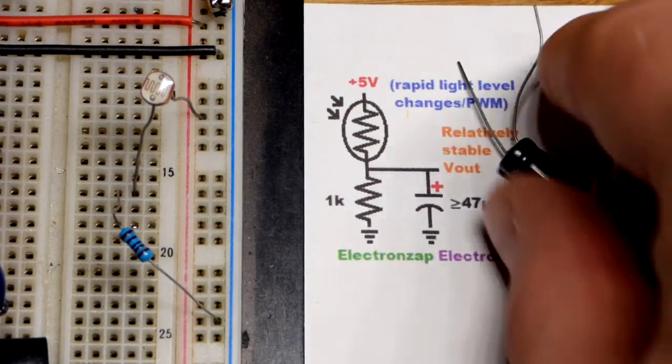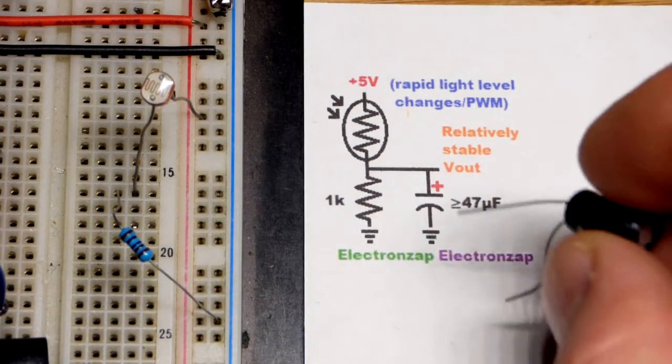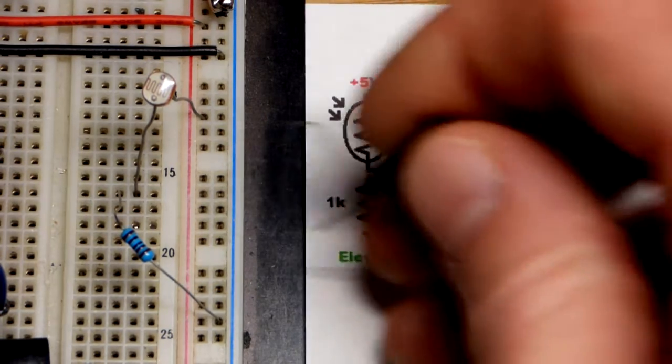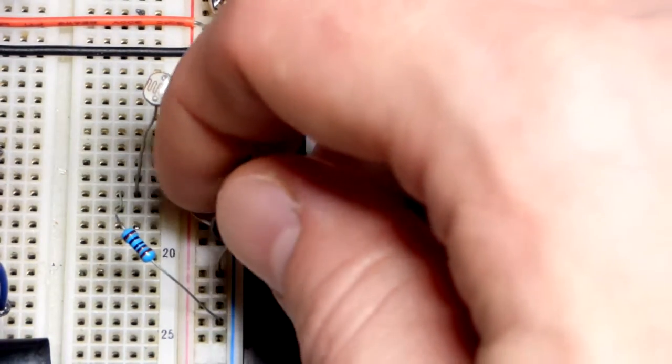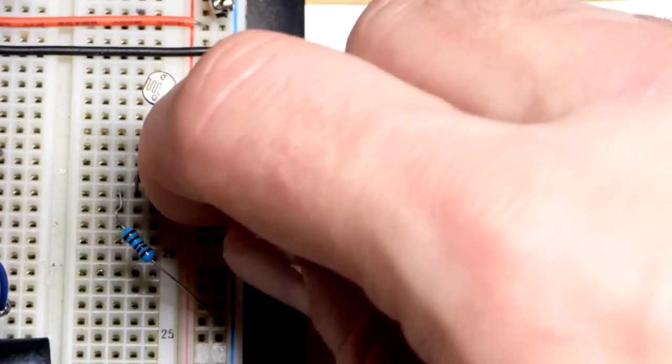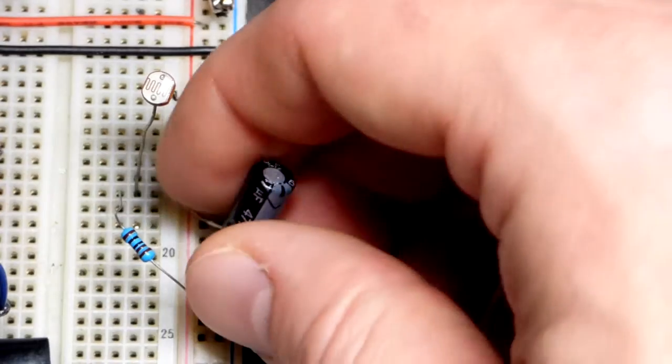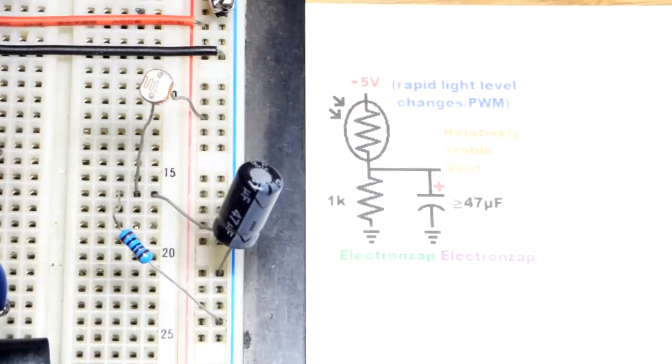It will actually smooth it out quite a lot. So I'm just using a 47 microfarad because it's not blocking too much of what we view right there. And so we'll plug it in. Higher value will smooth things out better.